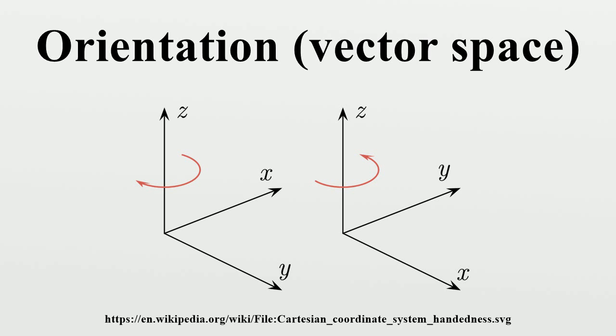For instance, in R3 a rotation around the Z Cartesian axis by an angle alpha is orientation preserving, while a reflection by the XY Cartesian plane is not orientation preserving.